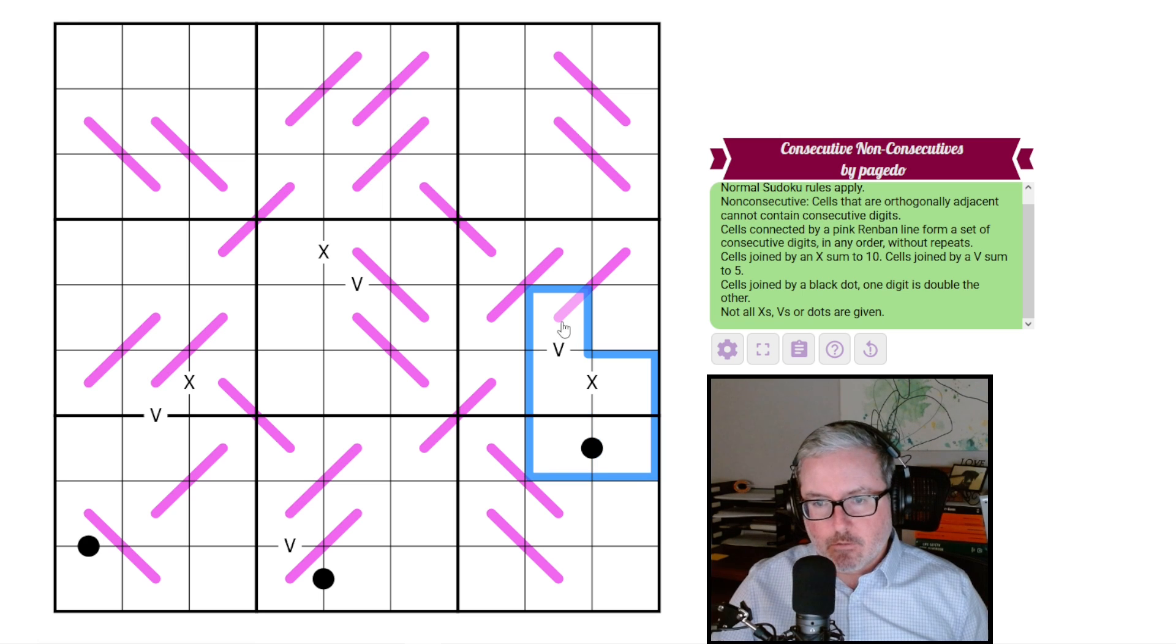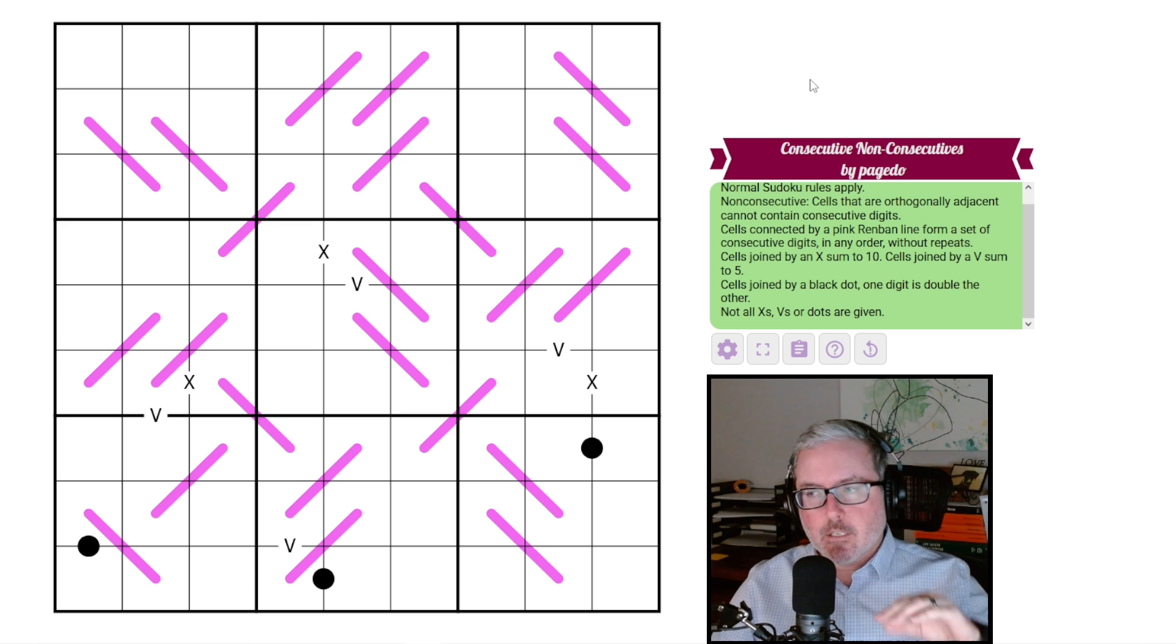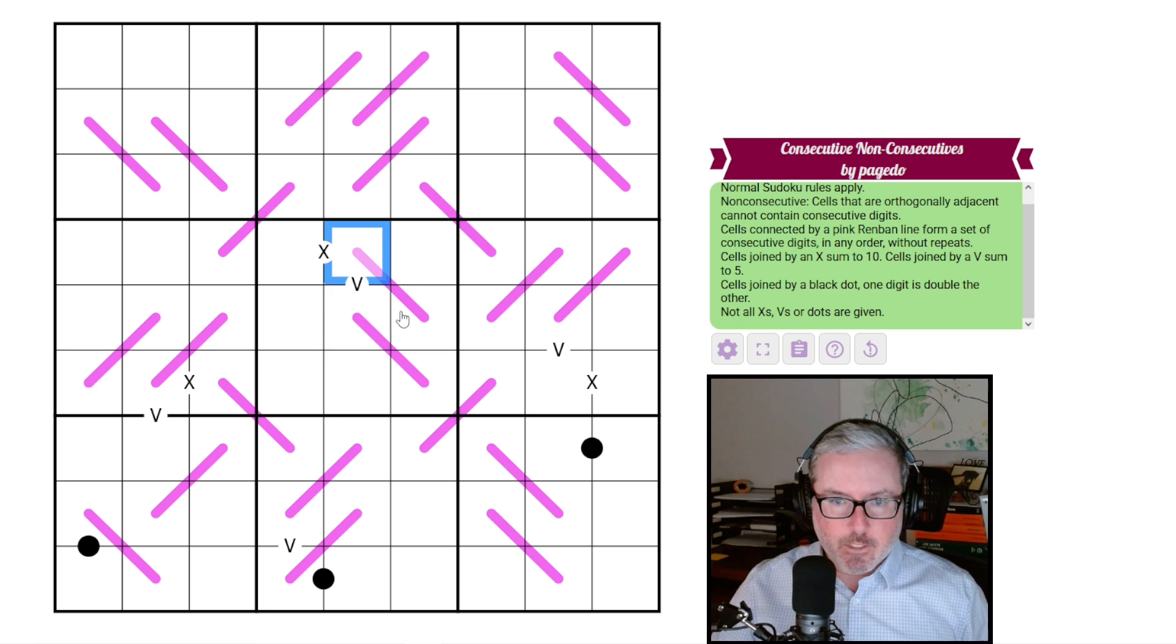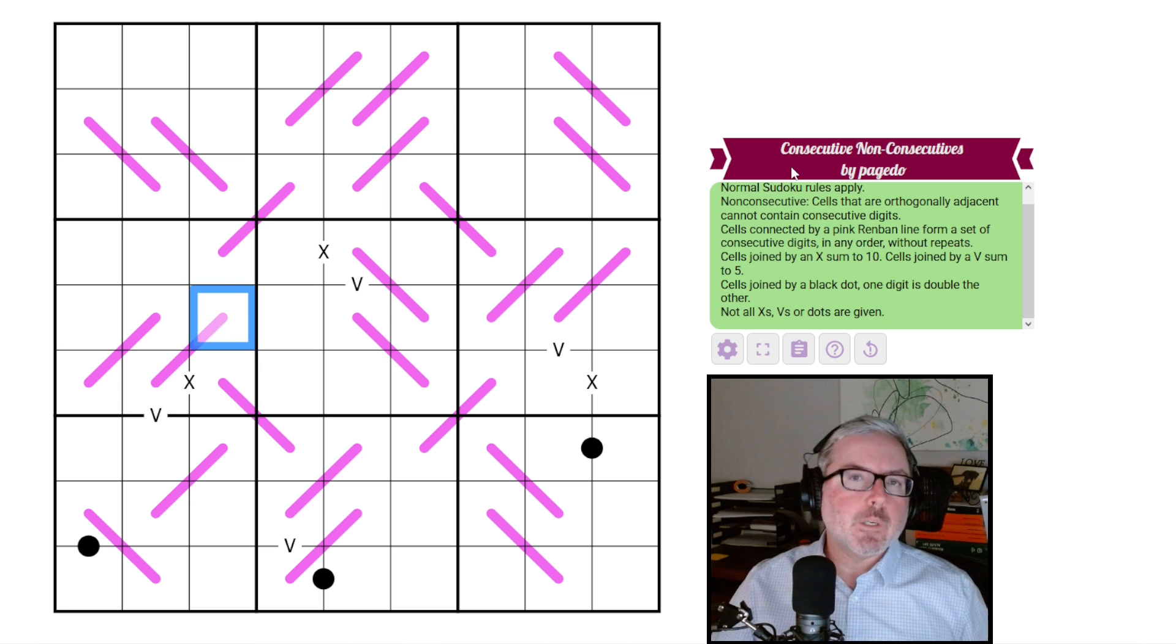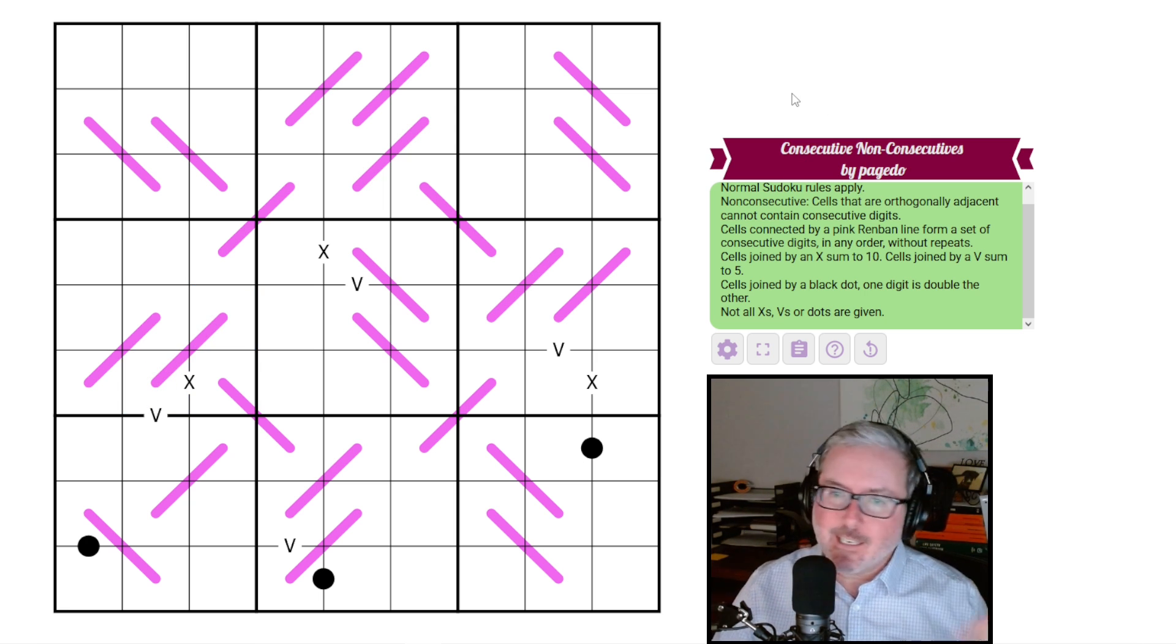And then not all Xs, Vs, or dots are given. So there's no negative constraint on the Vs, Xs, or kropki, just on the global, regional, global constraint of non-consecutive orthogonal adjacent cells. That's a mouthful. Anyhow, those are the rules, but it looks like there's going to be a nice interaction between all this stuff because there's a ton going on here. So with that said, links in the description below, let's get at it.